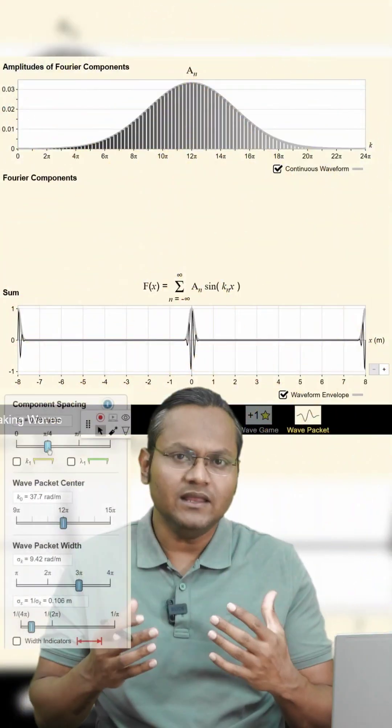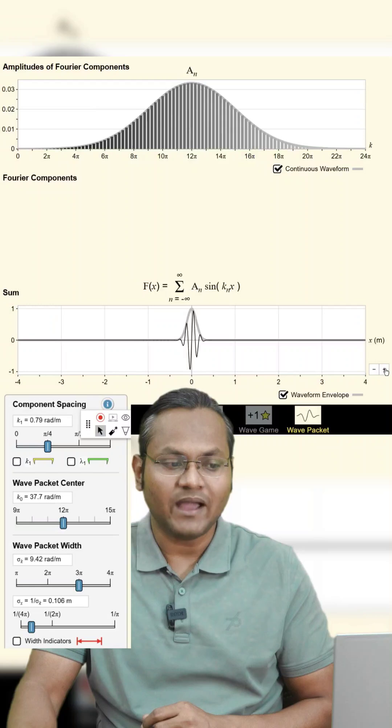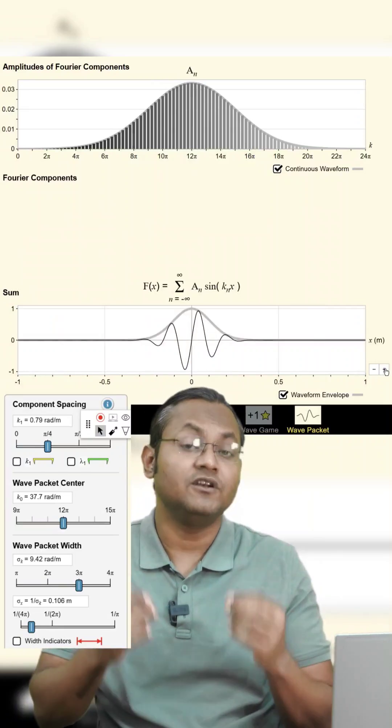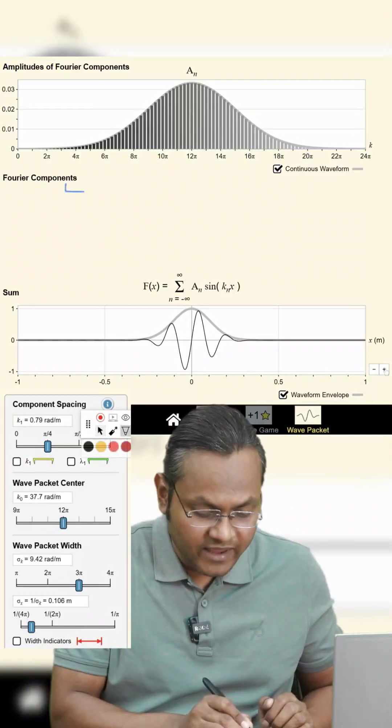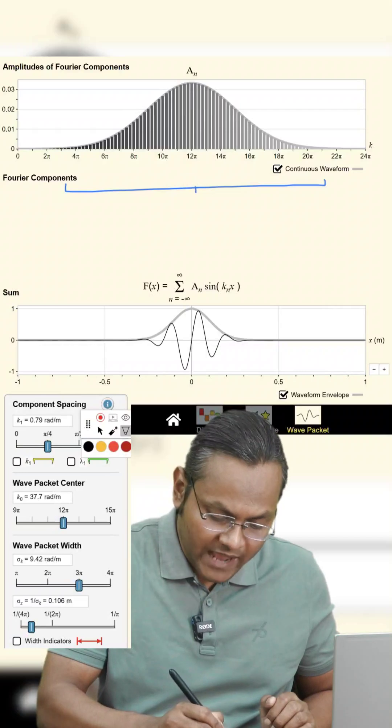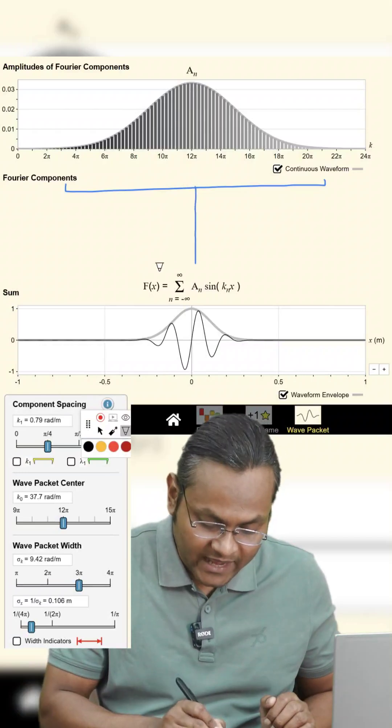Theoretically, to get a singular wave packet you will need an infinite number of sine waves with different wavelengths. But यहाँ पे एक और चीज है. This range of wavelengths is very related to the localization of the wave packet. ऐसा क्यों?